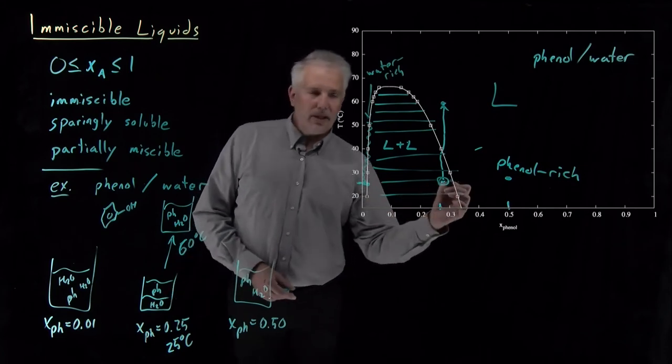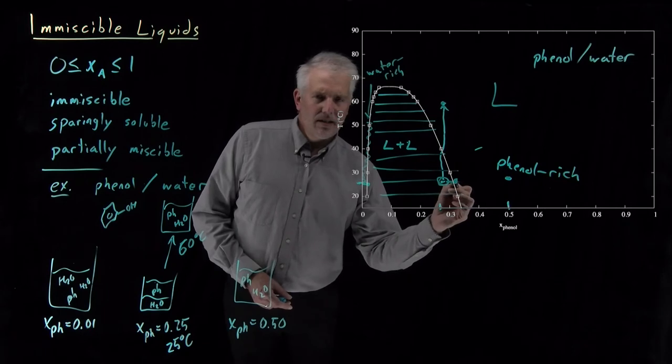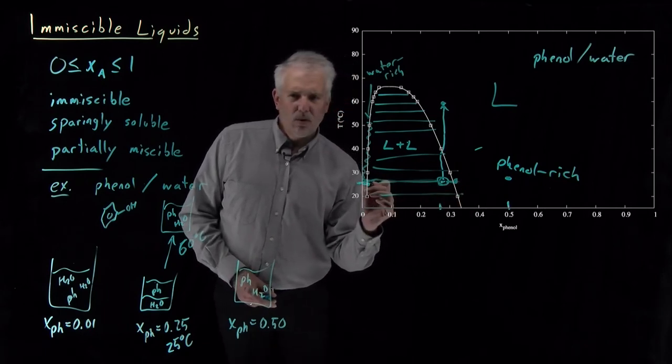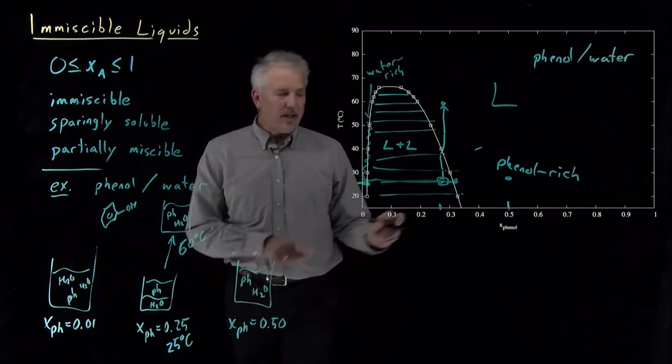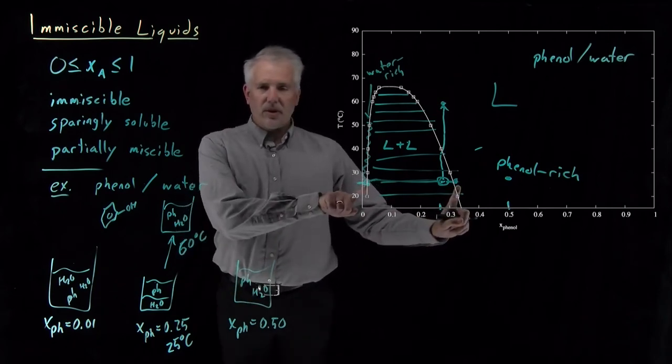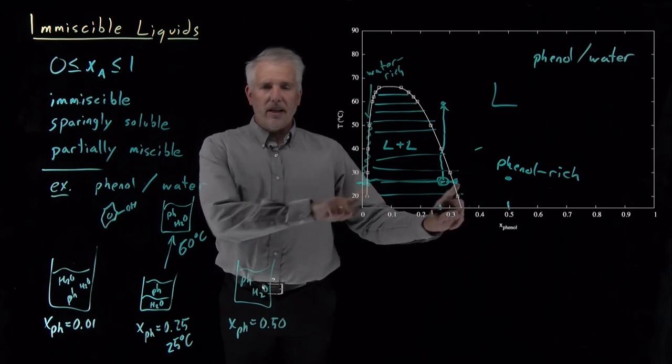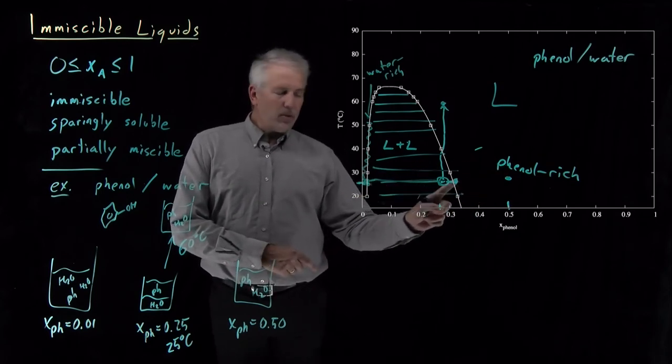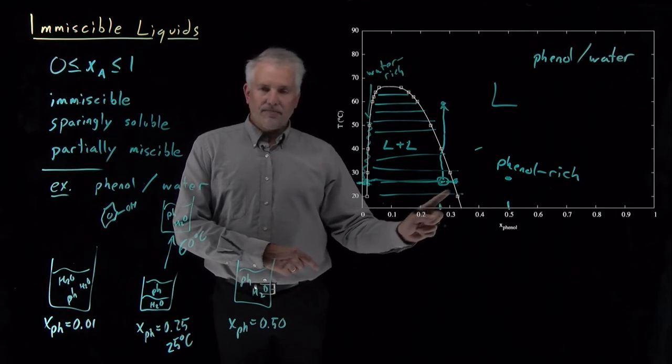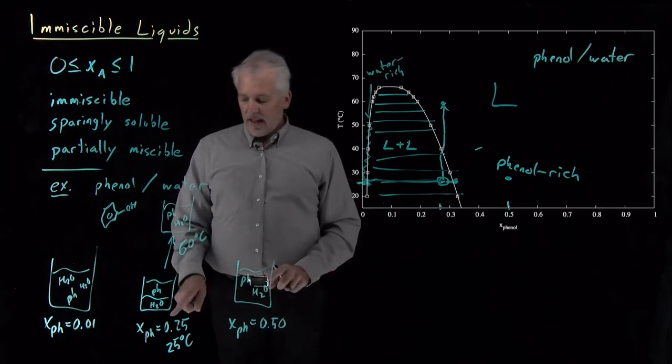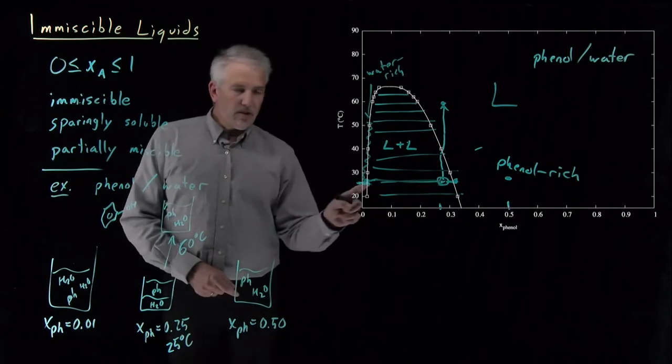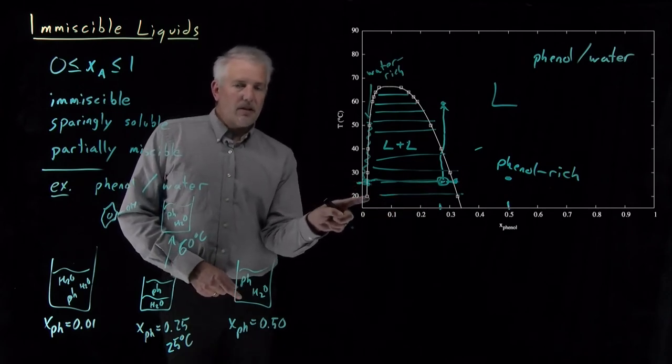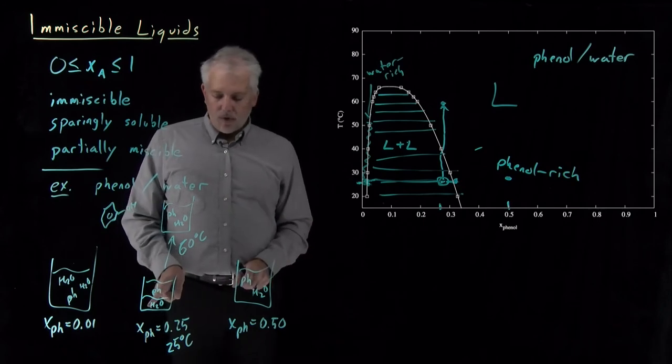What the tie lines tell me is that what I actually get when those phases separate is systems with the two concentrations given at either end of that particular tie line. I'll have a phenol-rich solution with a concentration of maybe 31% or 32% phenol by mole. And the water-rich phase will be at the other end of this tie line. That's down here at about 2% or 3% phenol in that water-rich phase.